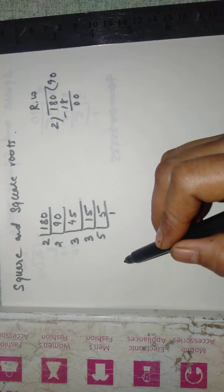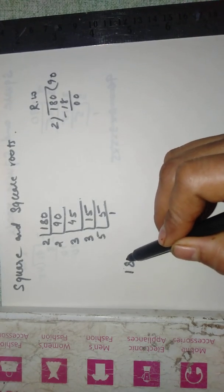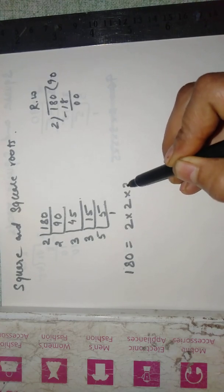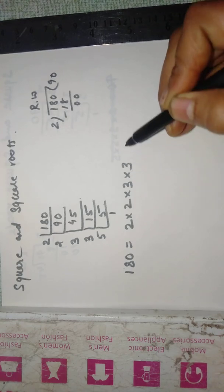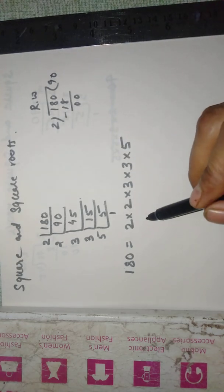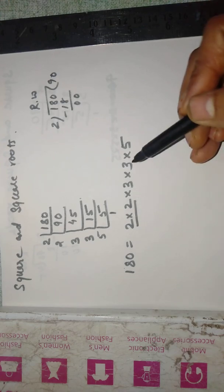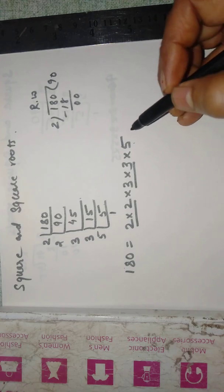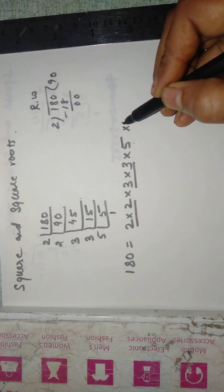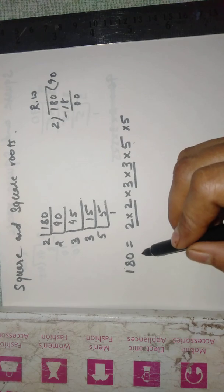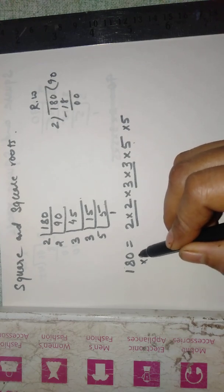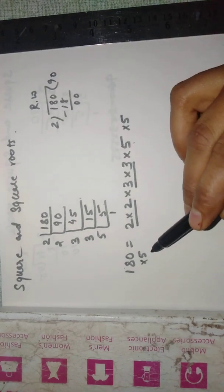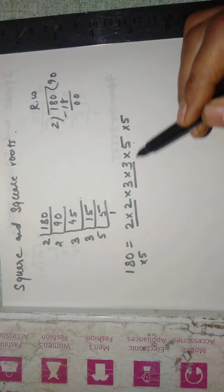Now 180 is written in terms of the product of its prime factors: 2 into 2 into 3 into 3 into 5. Now we pair up the common factors, 2 into 2 and 3 into 3. 5 is left over. Now if we multiply it by 5, then we have to multiply here also by 5. Then the factors of 180 into 5 will be in the pair.